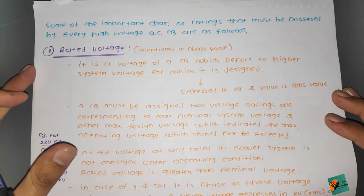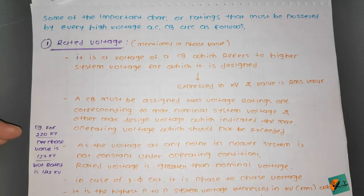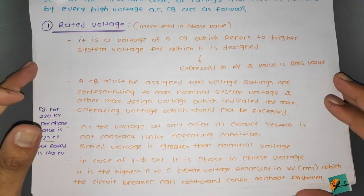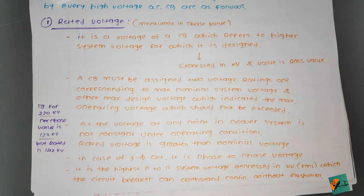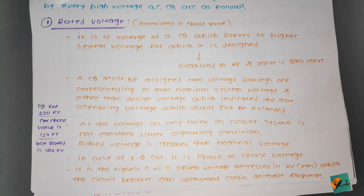Some of the important characteristics and ratings that must be possessed by every high voltage AC circuit breaker are as follows. The first one is rated voltage. It is generally mentioned as a phase-to-phase value for three-phase systems. It is the voltage of a circuit breaker which refers to the higher system voltage for which it is designed, expressed in kilovolts as an RMS value.